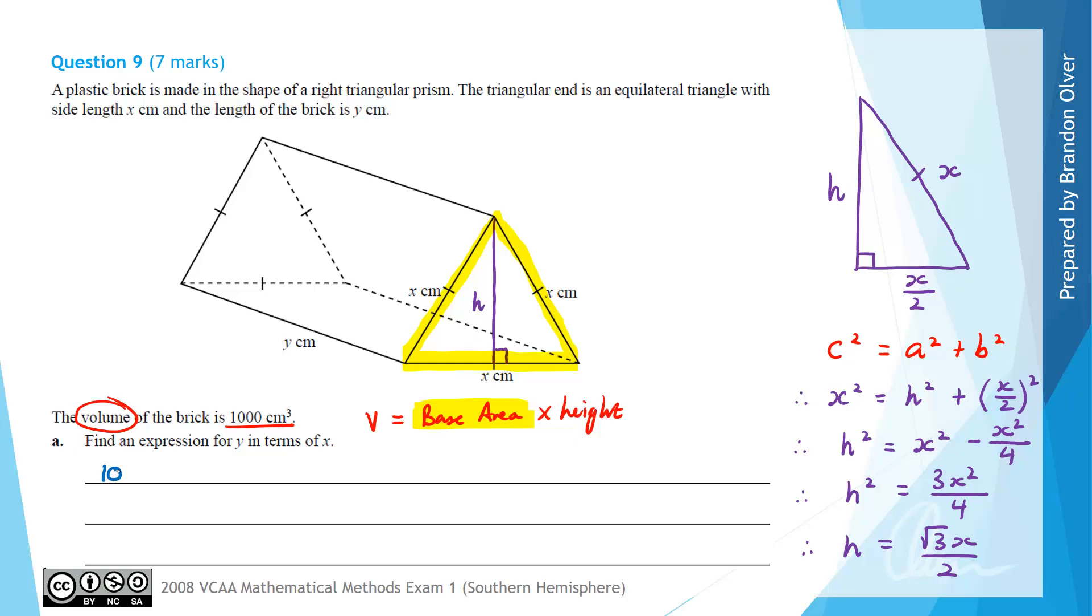We know that the volume 1000 equals the base area, which is half times x times h, but h is root 3x over 2, where the height of this is simply the length y. Therefore 1000 equals root 3x squared over 4 times y. Therefore 4000 equals root 3x squared y. To get y by itself, we divide by whatever was multiplying it. So y equals 4000 divided by root 3x squared. That is the answer for part A where we needed y in terms of x.